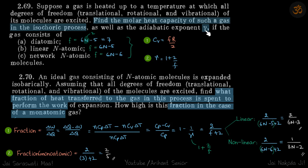Gamma is given by (1 + 2/f), so substituting the values of f gives gamma for each case. Problem 3: Find what fraction of heat transferred to the gas is spent to perform work in an isobaric expansion.